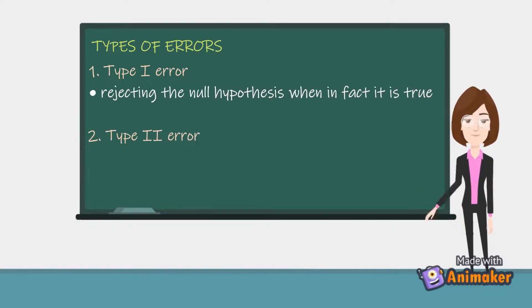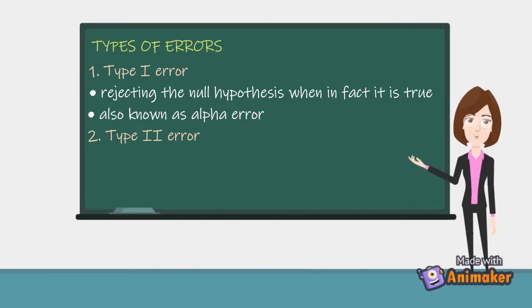Type 1 error happens when the null hypothesis is rejected when in fact it is true. It is also known as alpha error.